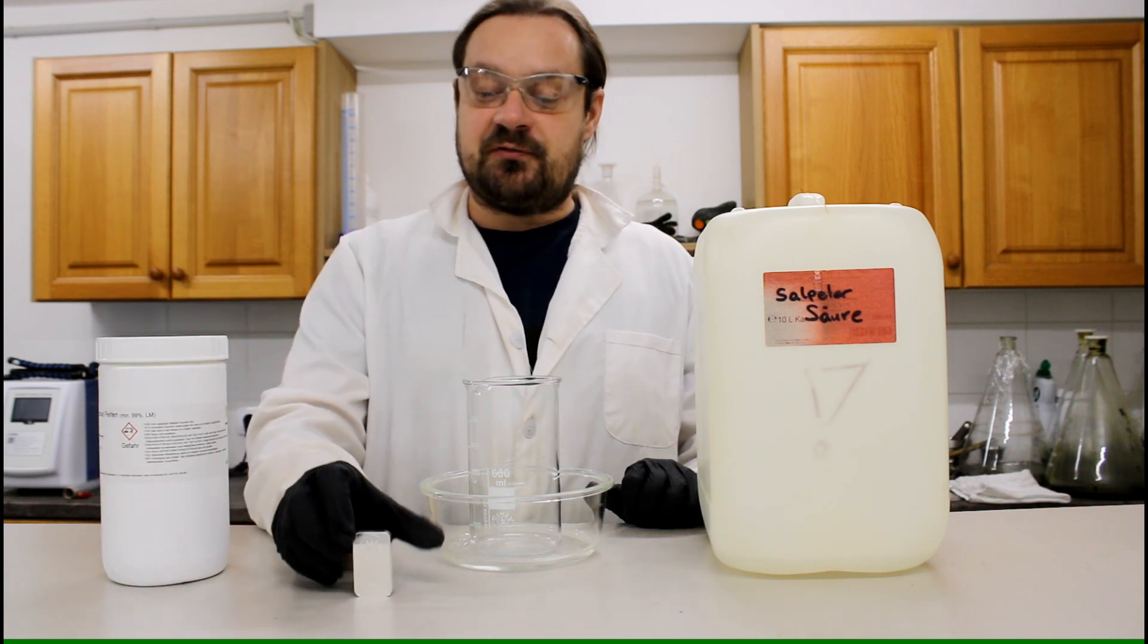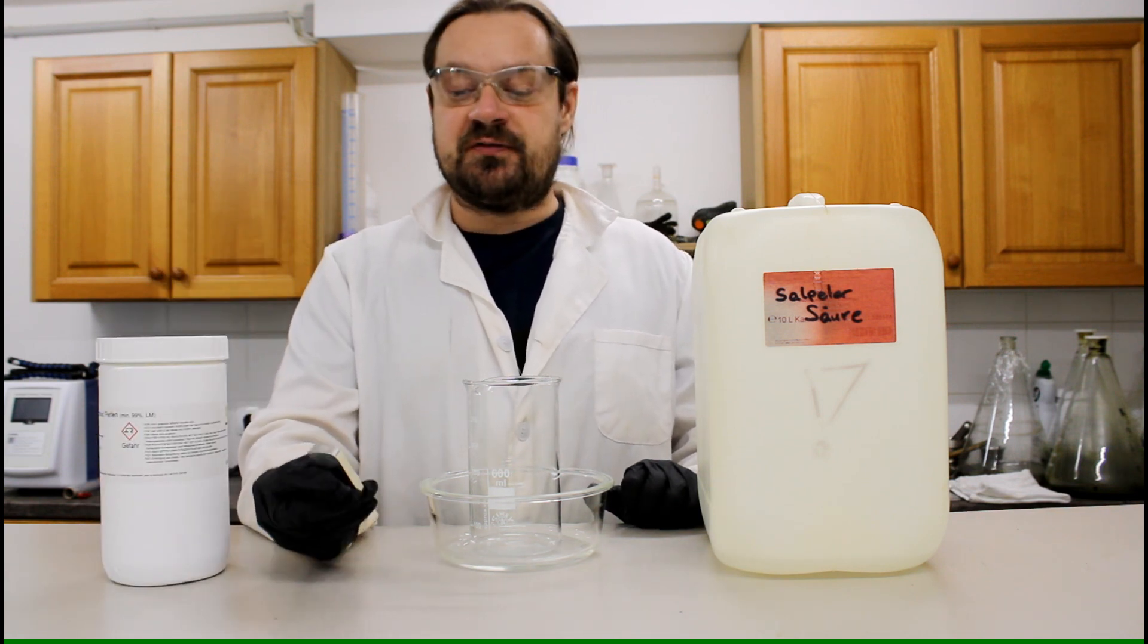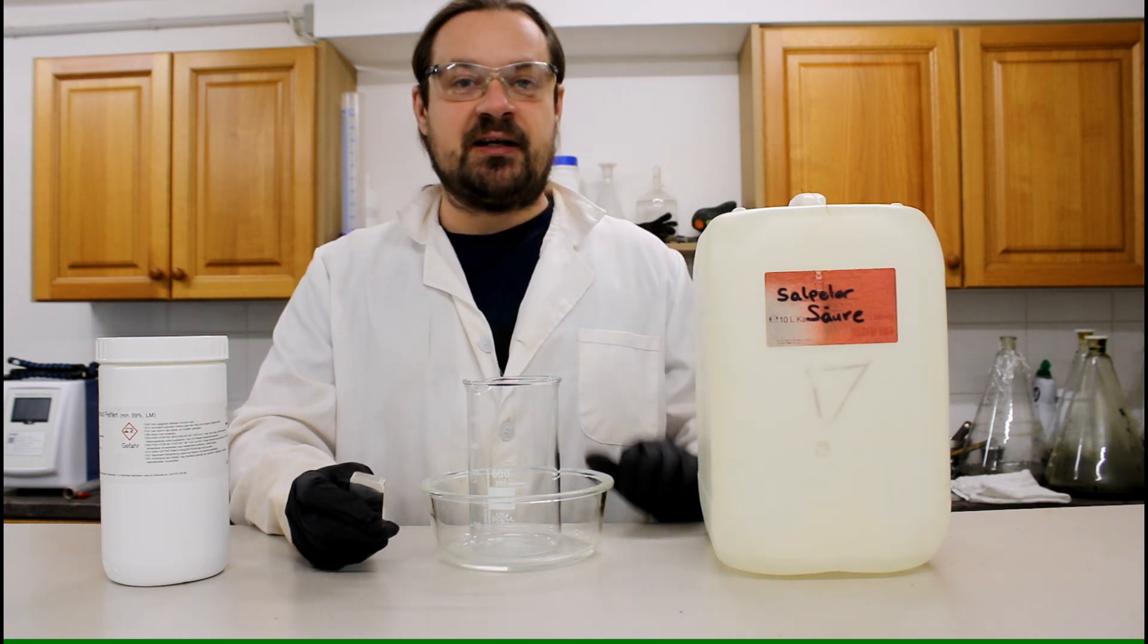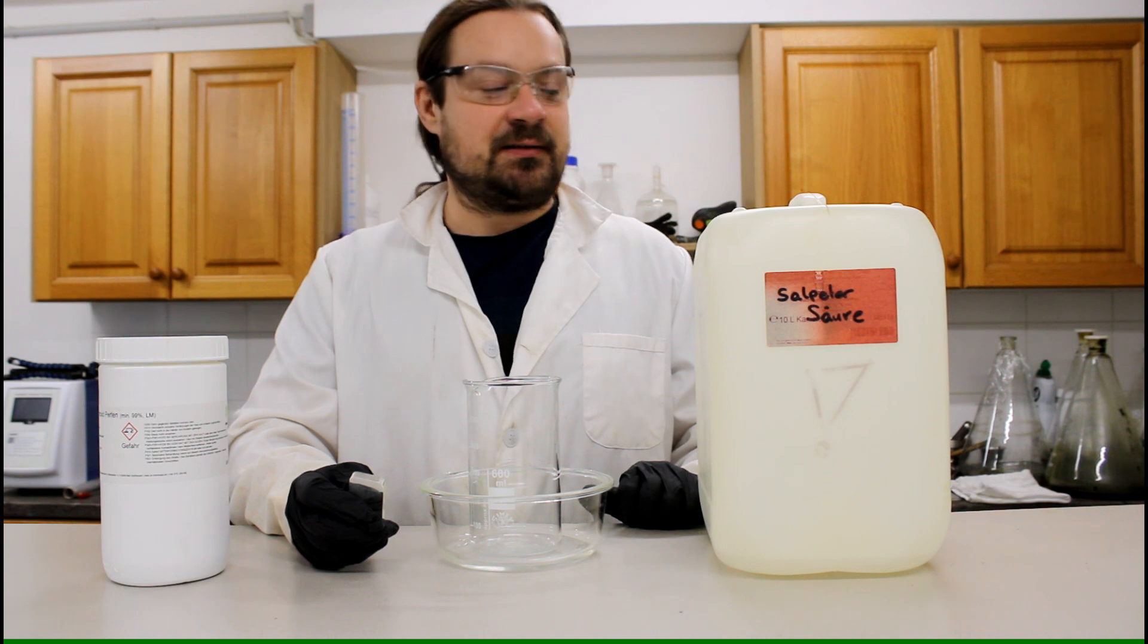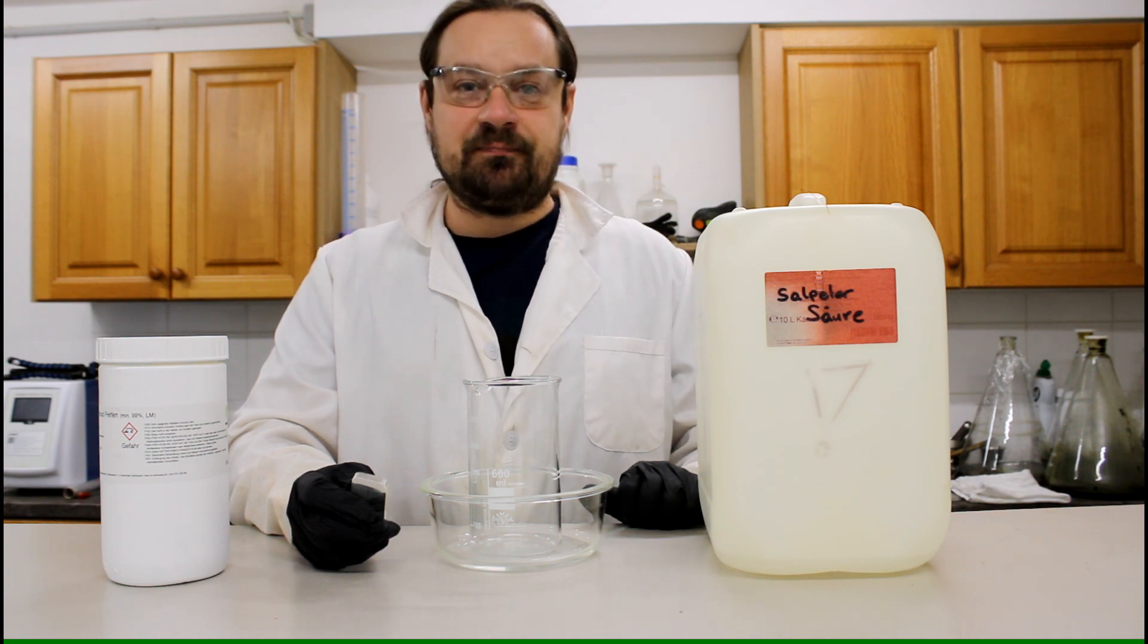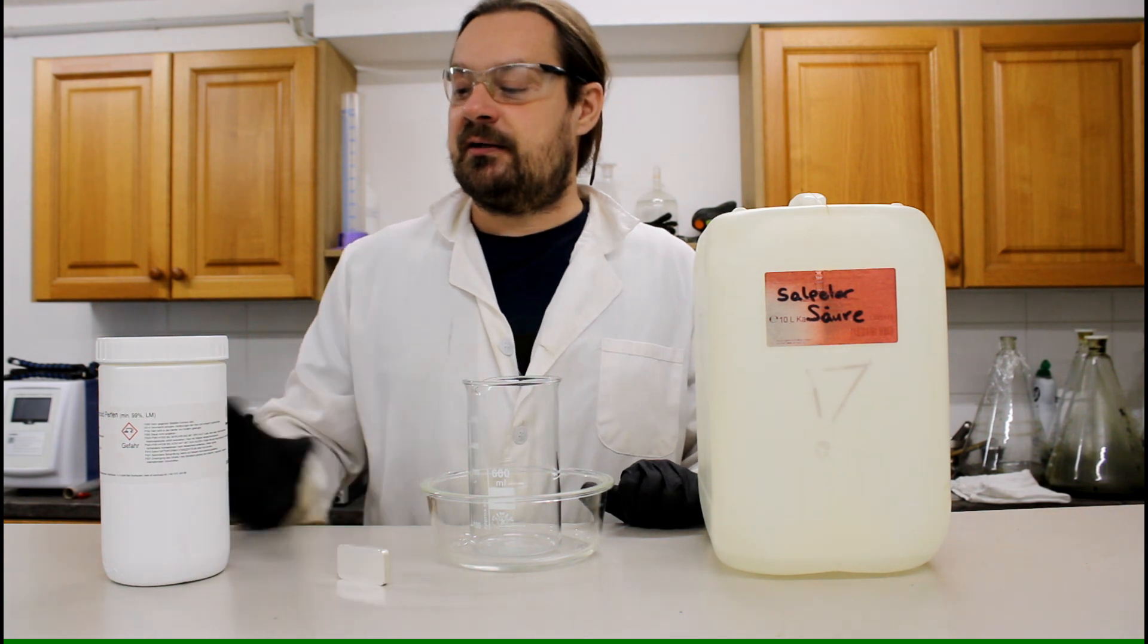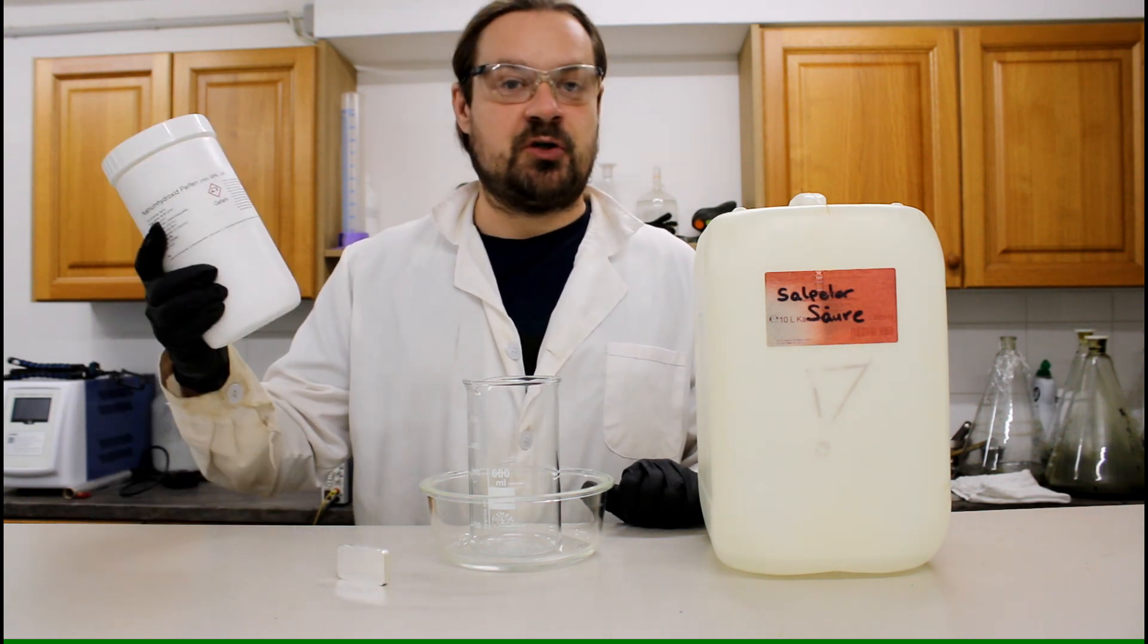To the process, first of all we are going to dissolve the silver metal with nitric acid. Then we are getting rid of the excess nitric acid by simply evaporating it, and then we are producing the silver oxide by mixing in some sodium hydroxide.